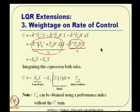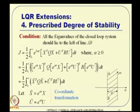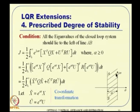The last extension is the prescribed degree of stability. Asymptotic stability means all eigenvalues are in the left half plane, but if eigenvalues are too close to the imaginary axis, robustness is poor — the actual nonlinear system eigenvalues may shift to the right half plane. We want a design that assures at least an alpha margin from the j-omega axis, meaning all eigenvalues lie left of the line s = -alpha. This is achieved by using the cost function with the weighting e^{2 alpha t}.